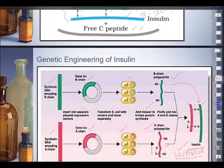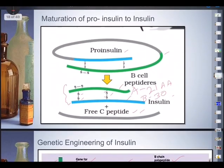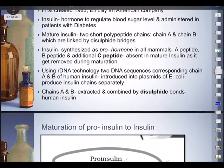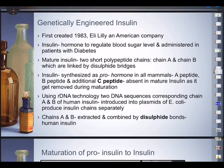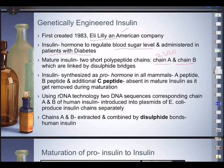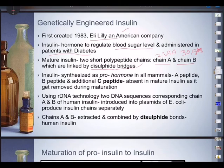To summarize: draw the diagrams and understand the A and B chains. Eli Lilly, an American company, first created this in 1983. Insulin is a hormone that regulates blood sugar levels and is administered to patients with diabetes. Mature insulin has two short polypeptide chains — Chain A with 21 amino acids and Chain B with 30 amino acids — totaling 51 amino acids, which is important for your NEET exam.